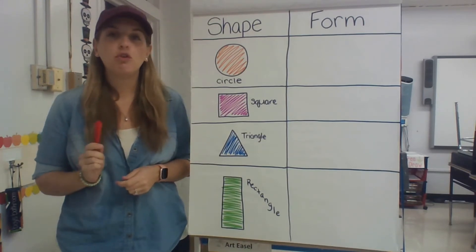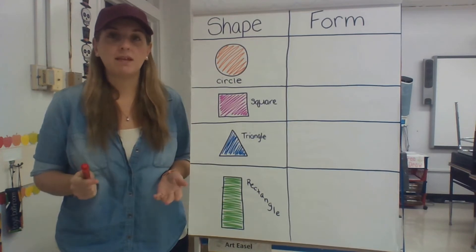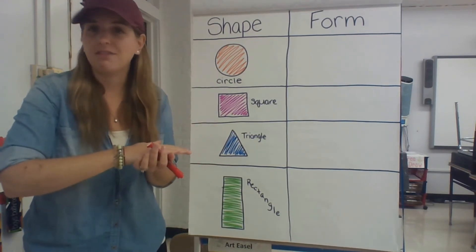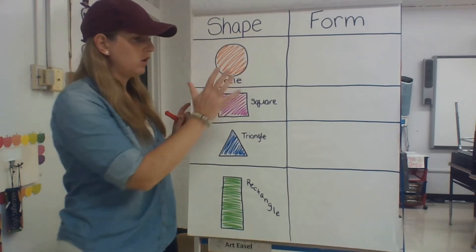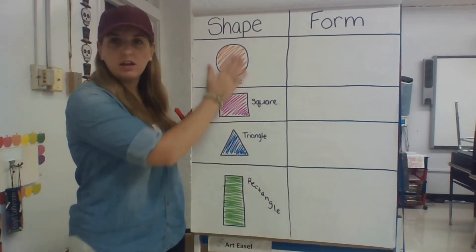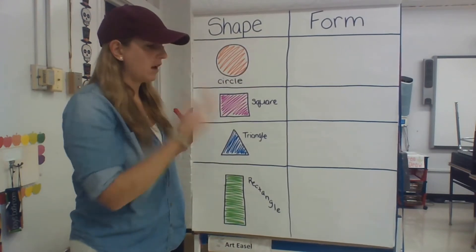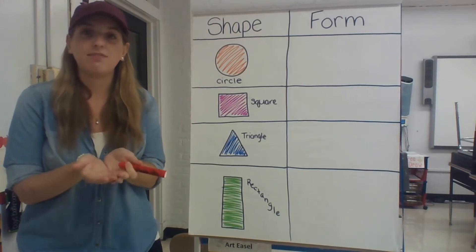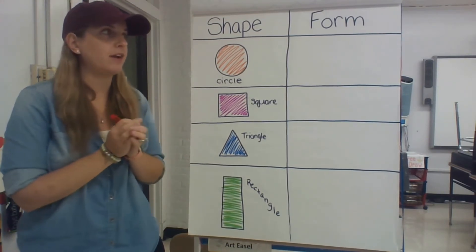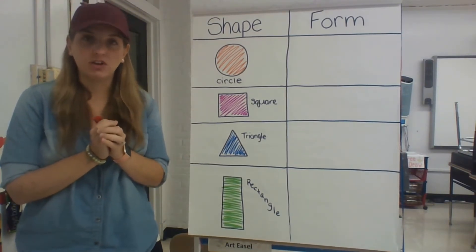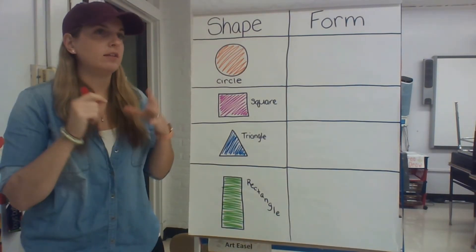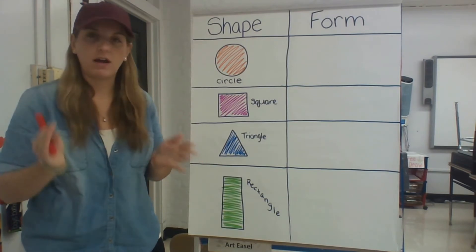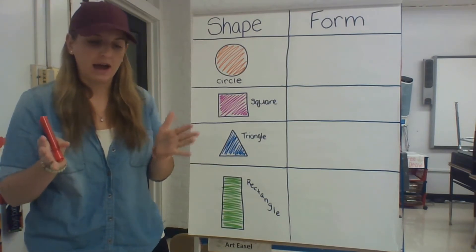A shape is two-dimensional, which basically means a shape is flat — flat like a pancake, flat like a piece of paper. Two-dimensional means you've got length and width, but that's about it. You can't hold it; it's simply flat. A form, on the other hand, is three-dimensional — it could be an actual object that you can hold in front of you.